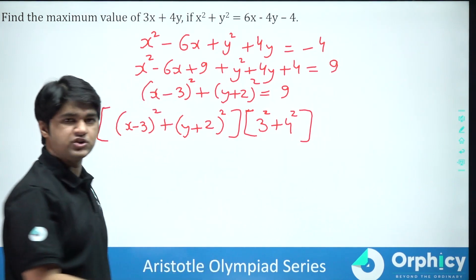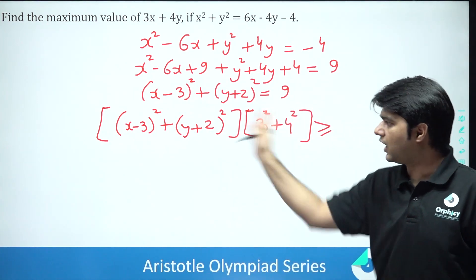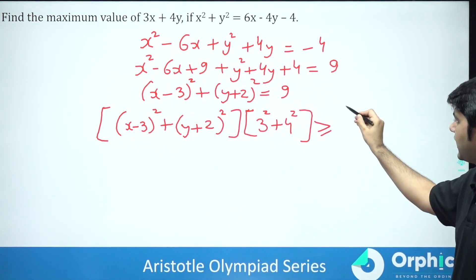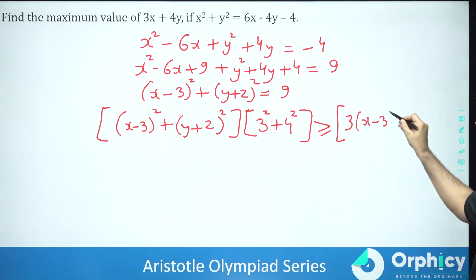Now as per Cauchy-Schwarz inequality, this has to be greater than or equal to their individual multiplication. So this will be your 3 times x minus 3 plus 4 times y plus 2 the whole square. So this will be the whole square.